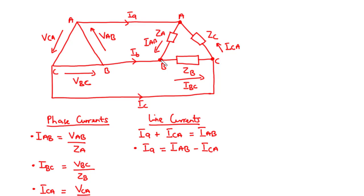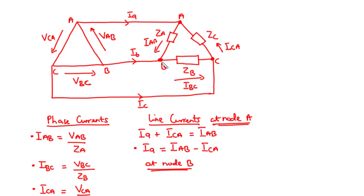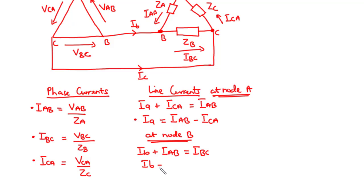Now let's move on to Ib. At node B we have Ib approaching the node, Ibc leaving the node, and Iab also approaching the node. So that gives us Ib plus Iab equals Ibc, therefore Ib equals Ibc minus Iab.